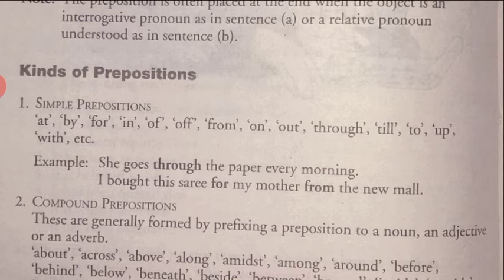If one of them is used in a sentence, you can understand very well. For example: 'She goes through the paper every morning.' Here, the word 'through' is used as a preposition. Another example: 'I bought this sari for my mother from the new mall.' Here, the words 'for' and 'from' are both prepositions used in the sentence. These are simple prepositions.